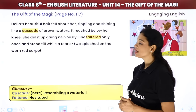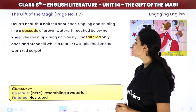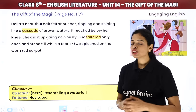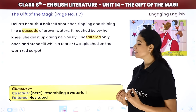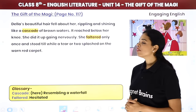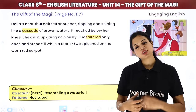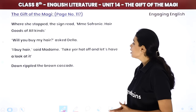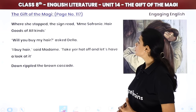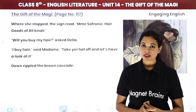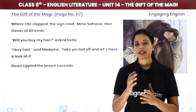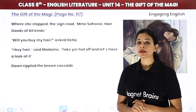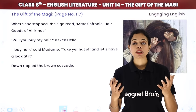She faltered only once - faltered ka matlab hesitate karna - and a tear or two splashed on the worn red carpet. Yeh batana chahte hain ki unki financial condition kitni poor thi. She then packed herself, put on her coat, and went outside. Where she stopped was a sign: Madame Sofronie - hair goods of all kinds. She stopped in front of this shop, jahan pe balon se related har tarah ke goods milte hain.